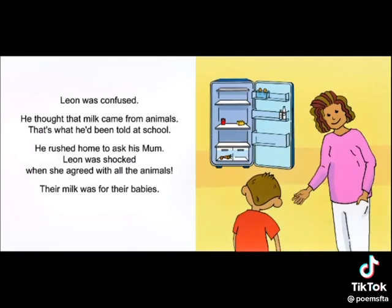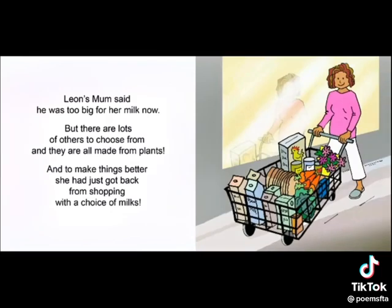Leon was confused. He thought that milk came from animals — that's what he'd been told at school. He rushed home to ask his mum. Leon was shocked when she agreed with all the animals: their milk was for their babies. Leon's mum said he was too big for her milk now, but there are lots of others to choose from and they're all made from plants. She had just got back from shopping with a choice of milks.